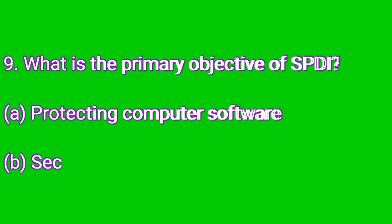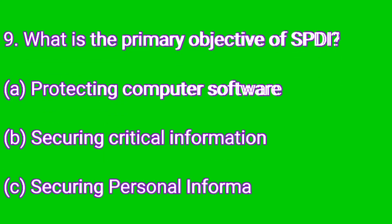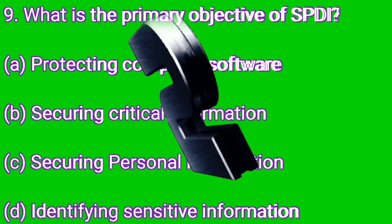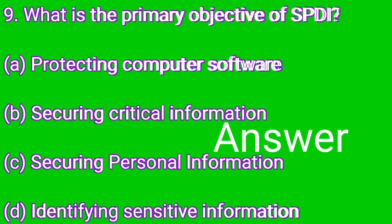Question number nine: what is the primary objective of SPDI? Option A: Protecting computer software. Option B: Securing critical information. Option C: Securing personal information. Option D: Identifying sensitive information. SPDI stands for Sensitive Personal Data Information. The primary objective of SPDI is securing personal information, so the correct answer is C.